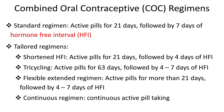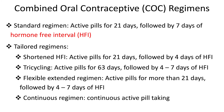In terms of the tailored way, there are four different options. The first is the shortened HFI regimen, where 21 days of active pill-taking is followed by just four days of hormone-free period. The second is tricycling, where three lots of active pills are taken continuously — 63 days of active pill-taking — followed by a four-to-seven day hormone-free interval. The third is flexible extended use, where active pills are taken for more than 21 days — say four, five, or six weeks — followed by four to seven days of hormone-free period.